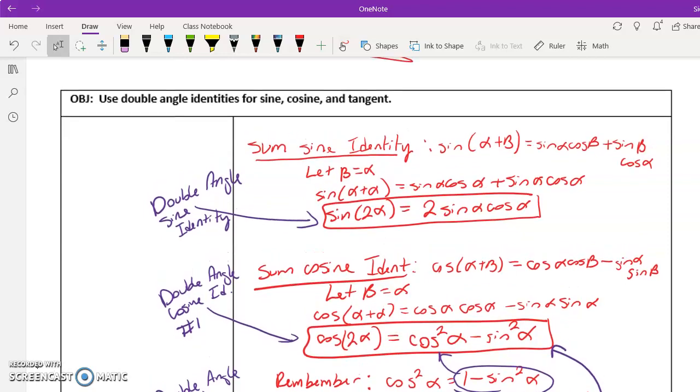The main thing that I want you to notice is we're starting with those same identities that we learned last week, like the sine addition identity. This is nothing new, but we are just letting alpha and beta be the same thing. So then it becomes 2 alpha. And when I replace all the betas, I come up with this formula. So this is where that double angle identity comes from.